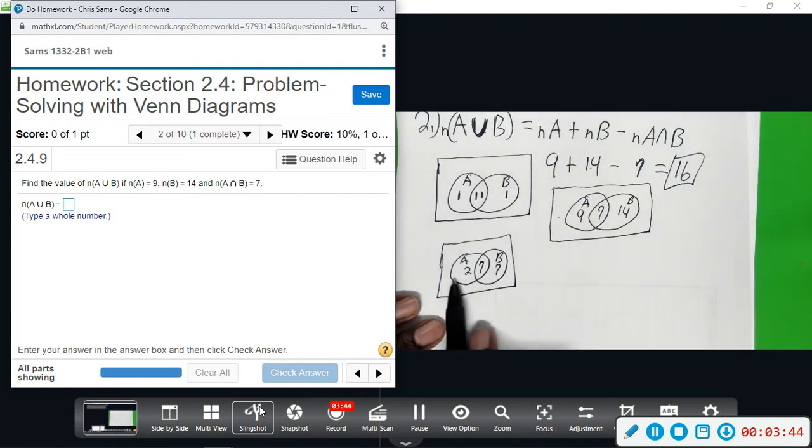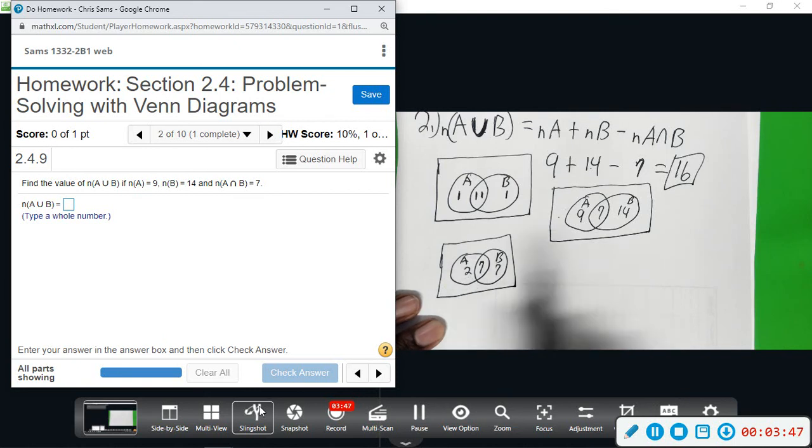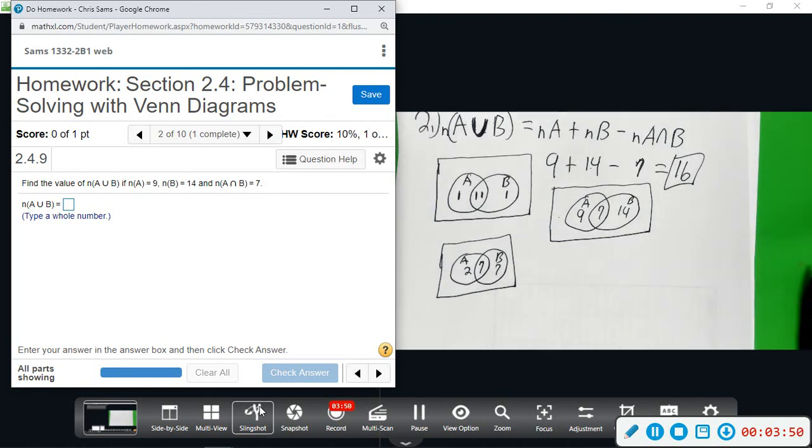So, this is a better way to draw it. That way, you can just add straight across. 7 plus 7 is 14, plus 2 is 16, but either one works. So, you get 16 in A union B.